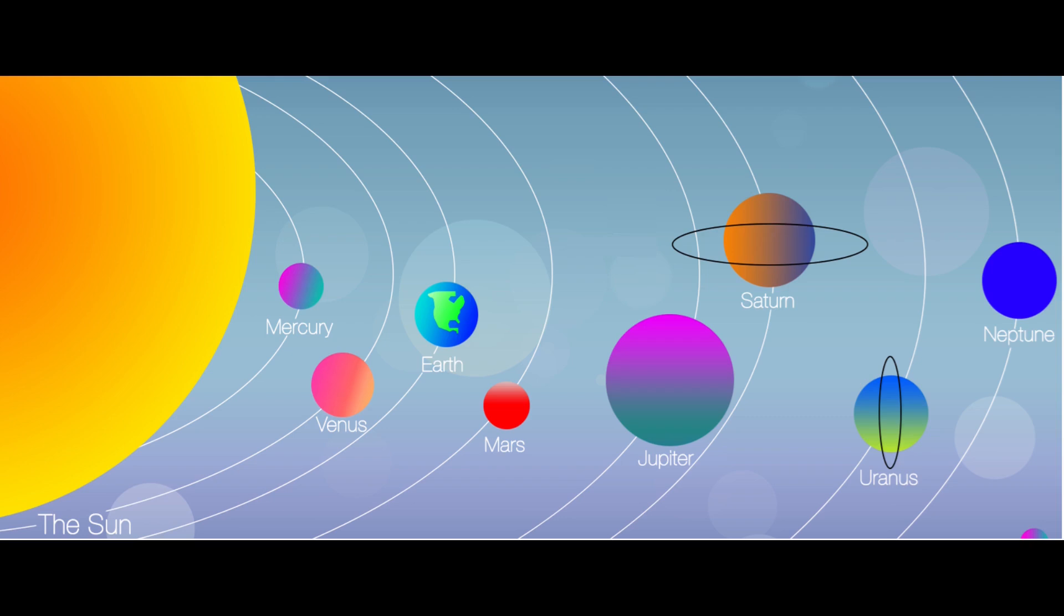Now, around the sun, we have eight planets that are all orbiting like race cars on a track. They don't bump into each other because they are all spaced out just right. Let's meet the planets one by one.